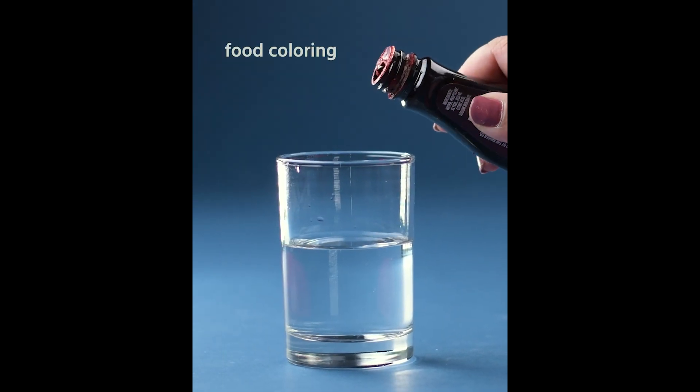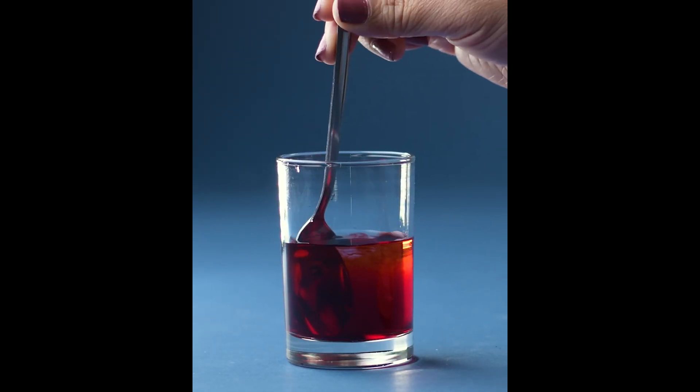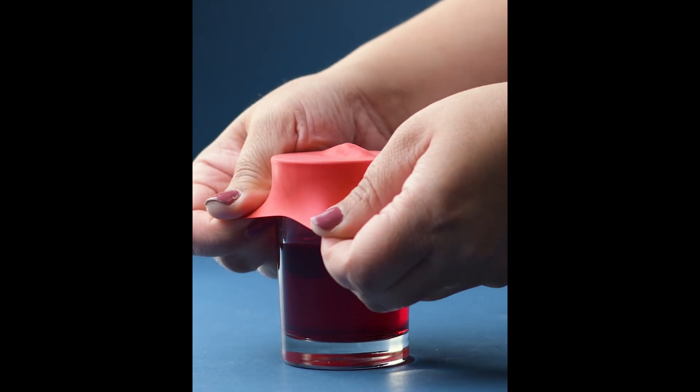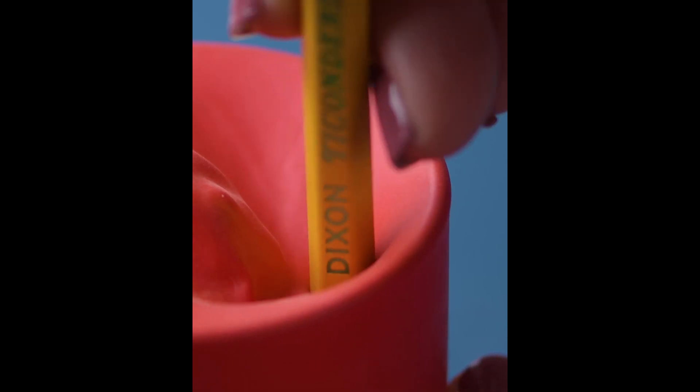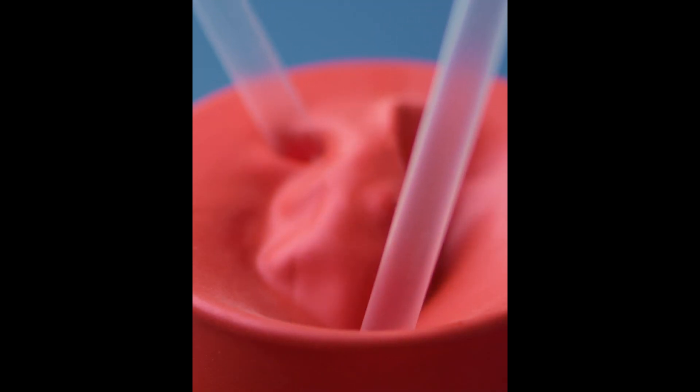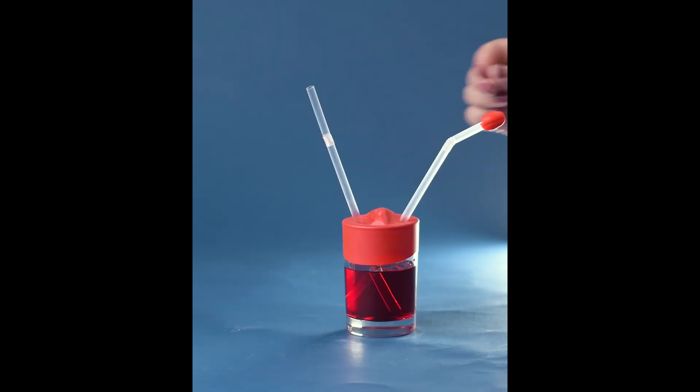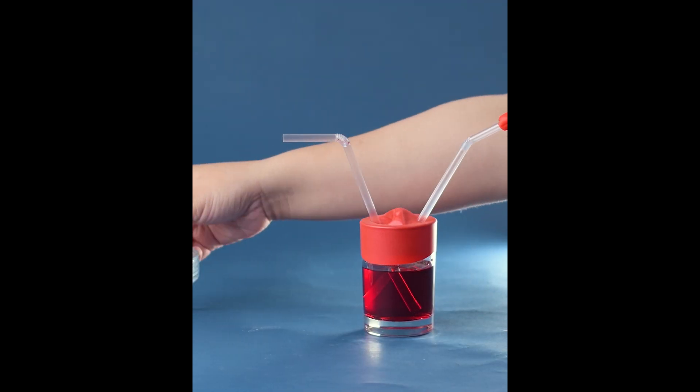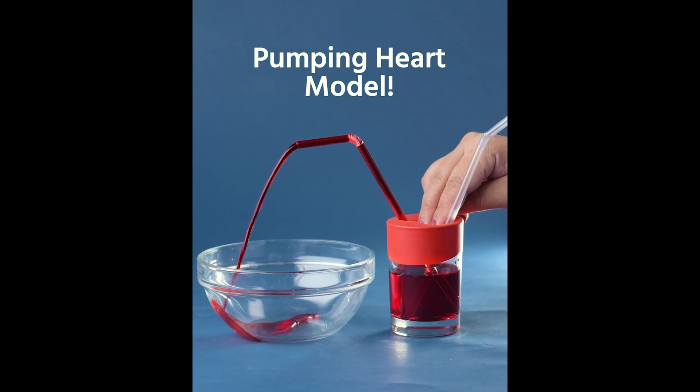Let's make a heart model. Cut a balloon, then add food coloring to water. Cover the cup with the balloon. Use a pencil to make two holes. Then insert bendy straws. Cover one bendy straw with molding clay. While over a bowl, push down on the balloon. This is how your heart pumps blood.